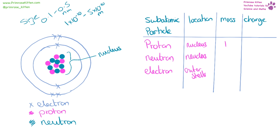Protons have a mass of one, neutrons have a mass of one, and electrons are incredibly tiny — their mass is one two-thousandths that of a proton or a neutron. Protons have a charge of plus one, neutrons have no overall charge, and electrons have a charge of minus one.